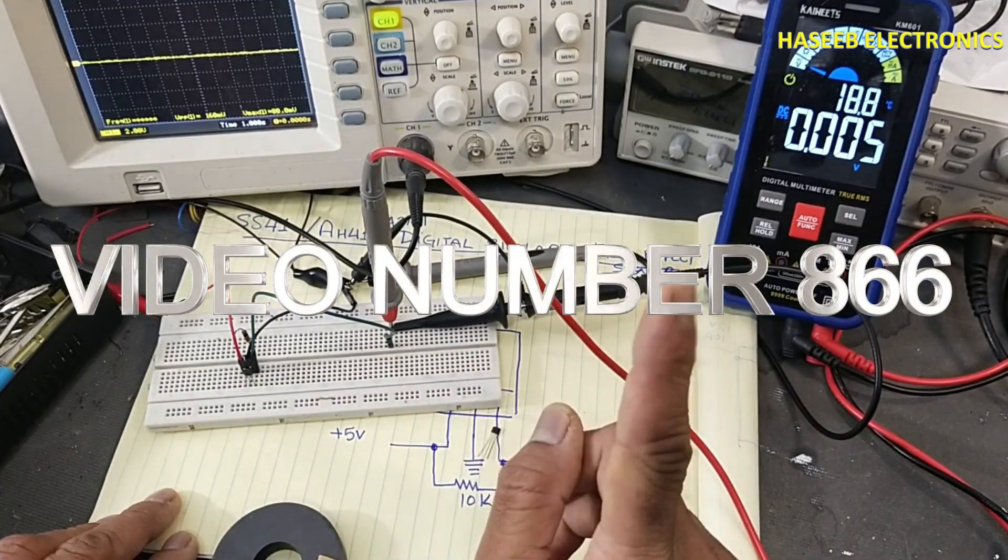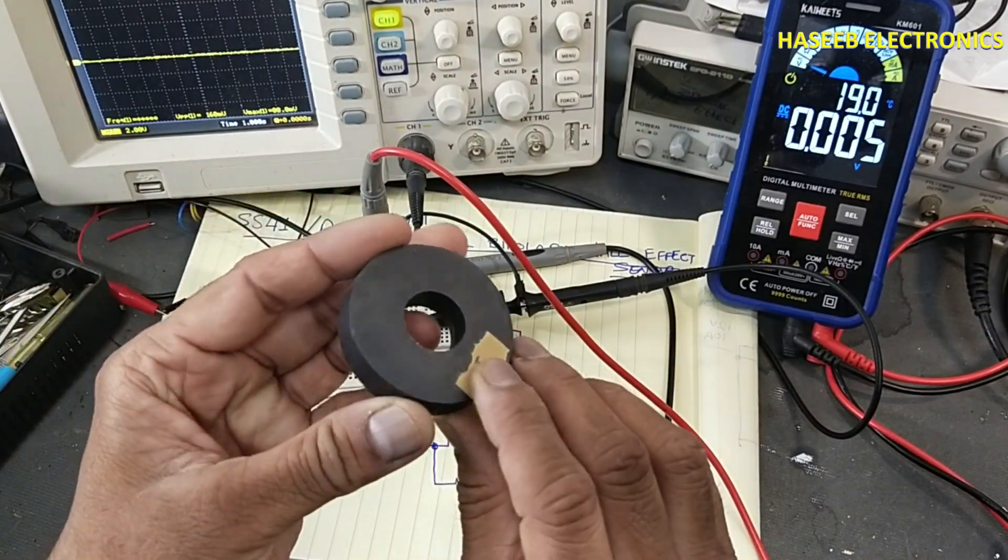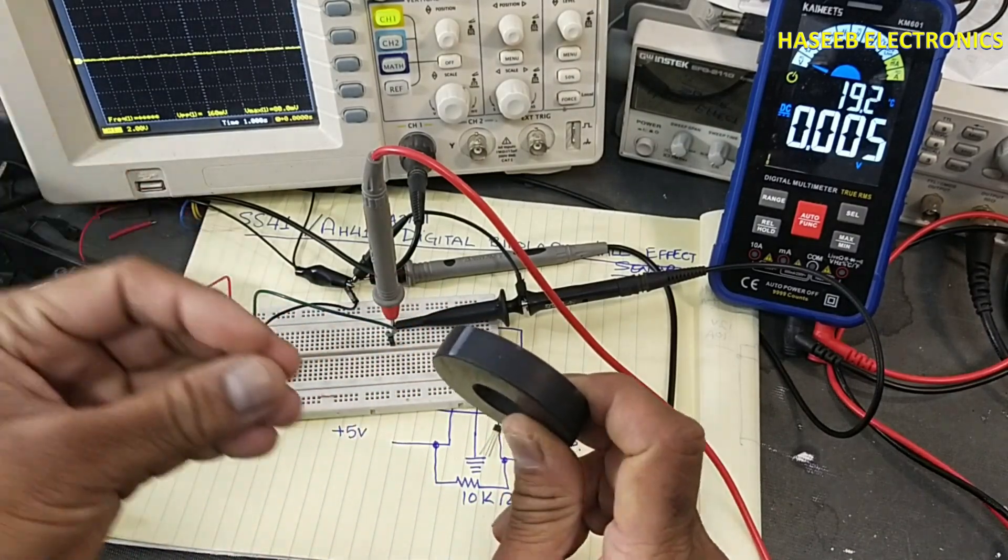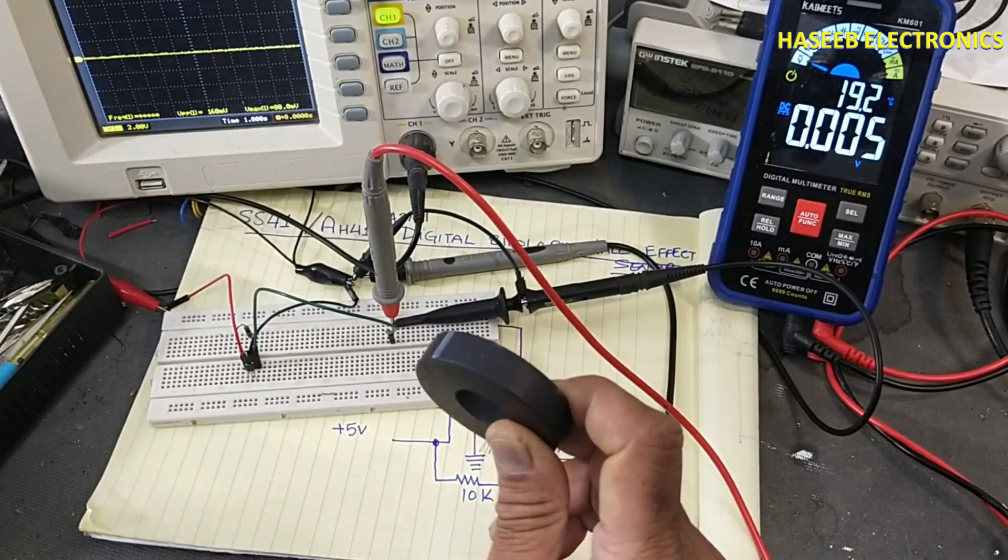That is bipolar magnet. What is bipolar magnet? This is north pole and this is south pole. We can use any magnet, any electromagnet, or any rotating magnet, so it will detect.